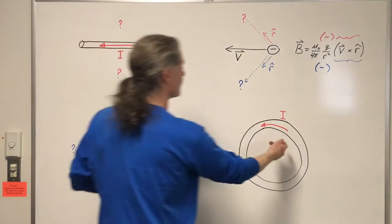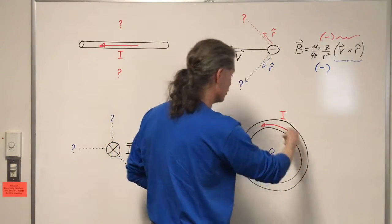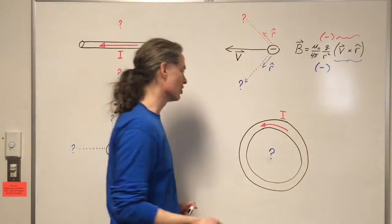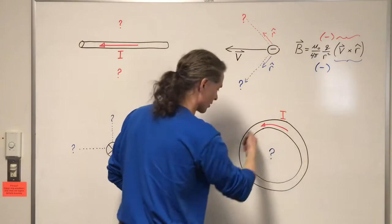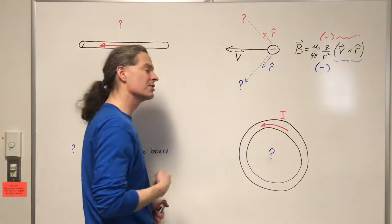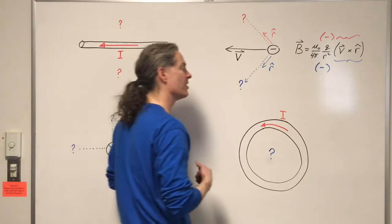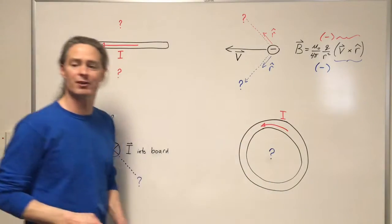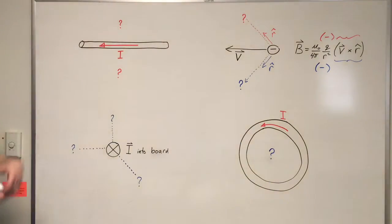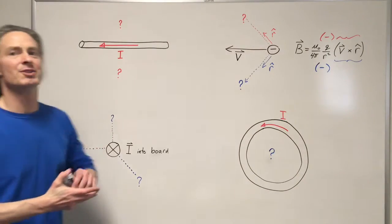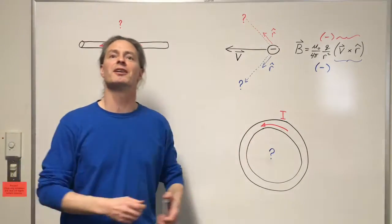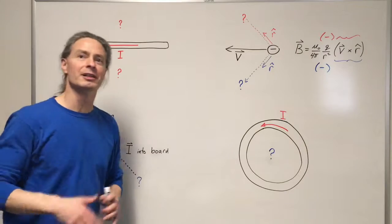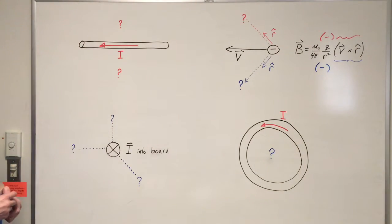And finally, we have a loop of current. We have current going in the loop, driven by some battery, for example, that's not shown. The current's going this way, and we want to find the direction of the magnetic field that this current produces at the center of the loop. These are all examples illustrated in other videos, but I want to blow through all these quickly right here in one shot.